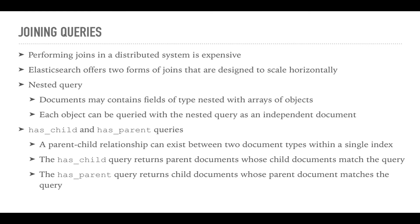Because performing joins in a distributed system is expensive in terms of performance, Elasticsearch offers two forms of joins that are designed to scale horizontally. The first is the nested query, which you may remember from when I talked about the nested data type. If a document contains a field of the type nested with an array of objects, then each of these objects can be queried as independent documents by using the nested query.